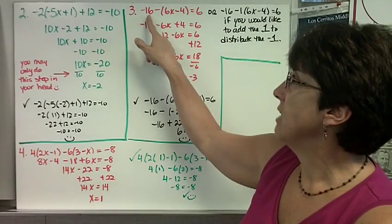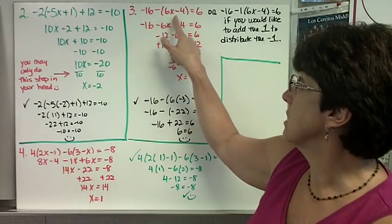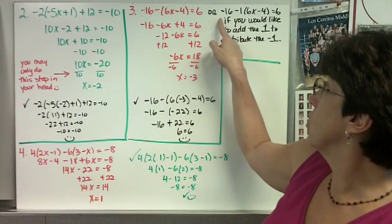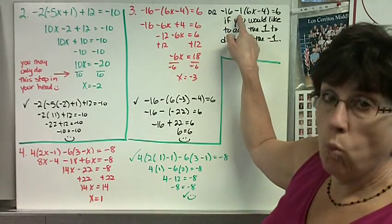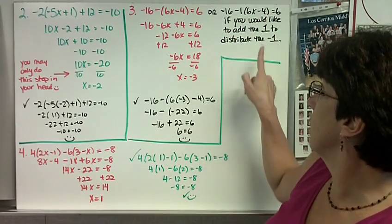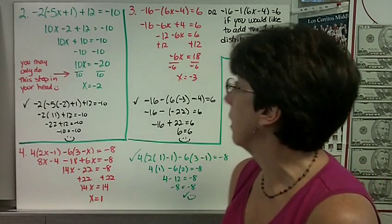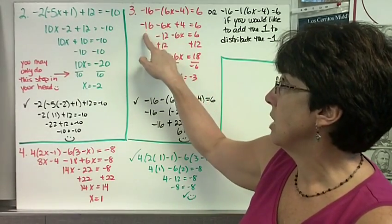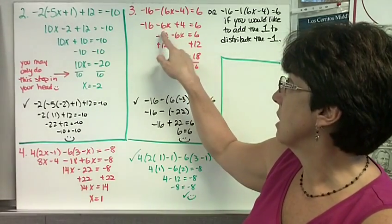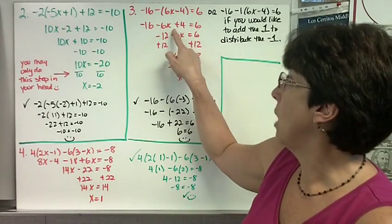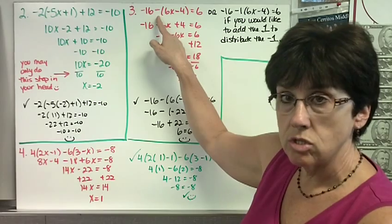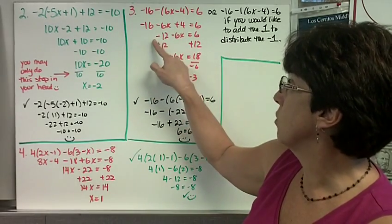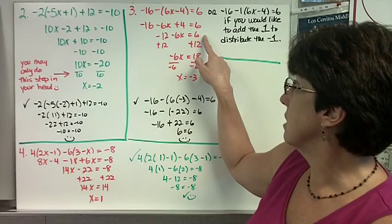Problem 3: negative 16 minus the quantity of 6x minus 4, equals 6. When you don't have a coefficient showing in front of the parentheses, you may rewrite it as negative 16 minus 1 times the quantity of 6x minus 4, equals 6. You can also think of it as taking the opposite of what's inside: the opposite of 6x is negative 6x, and the opposite of negative 4 is positive 4. Combine like terms: negative 16 plus 4 is negative 12 minus 6x equals 6.